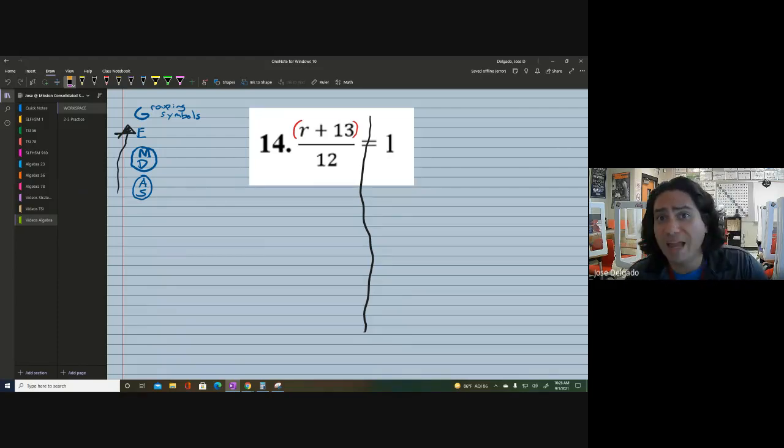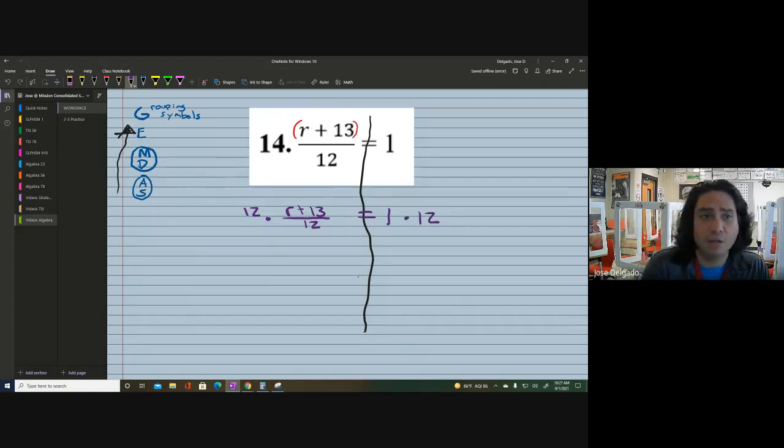I'm going to read the equation one more time just so you could understand the steps. We start with R and then we add 13 to R and then we divide by 12. So the first thing technically we're going to undo was the divide by 12 and the opposite of dividing by 12. I'm just going to recopy this. I'm going to copy it down here because it's easier for me to work with.